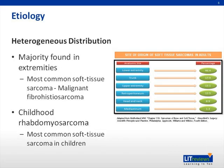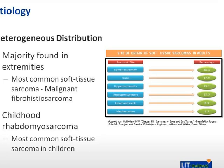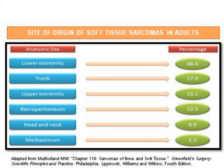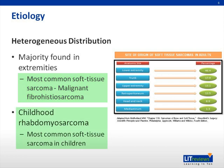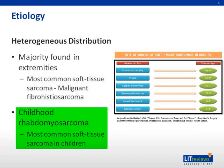The distribution of sarcomas is fairly heterogeneous. The majority are found in extremities. As shown in this graphic — a table from a study published in the American College of Surgeons back in 1987 — 46.4% of sarcomas in adults are found in the lower extremities, with a good majority also in the trunk and upper extremities. The head and neck comprise approximately 9–10%, and the mediastinum is a very small percentage. The most common soft tissue sarcoma is malignant fibrous histiocytoma, and the most common in children is rhabdomyosarcoma.